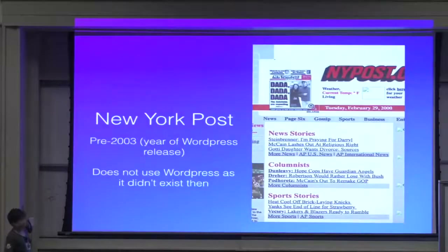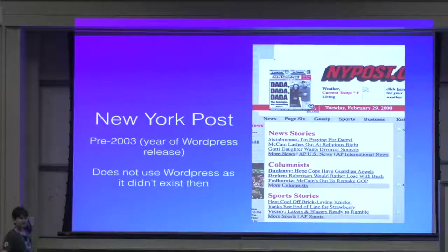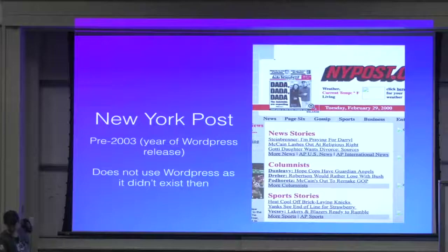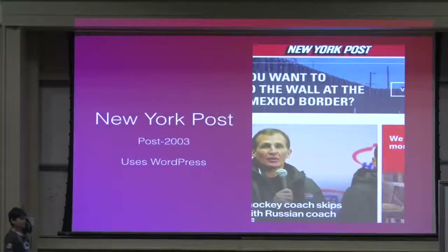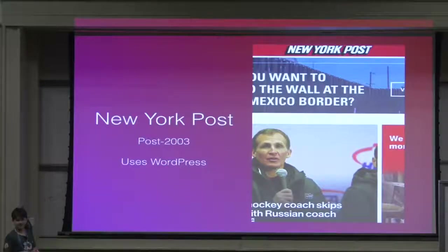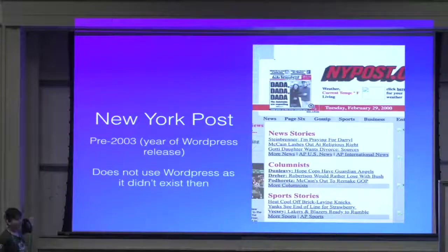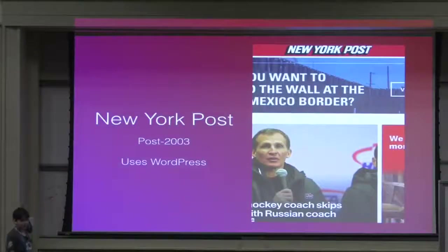A good example of this is the New York Post. This is the New York Post pre-2003 — they made some questionable design choices, such as the Times New Roman font and underlines with the links. It's not the best website. However, now in modern times when they use WordPress, they have good margins, pictures and text buttons, good formatting, and more things that make it look like an overall better website. And while the older site probably took a month to create, this site probably took a couple of hours to a day or two.